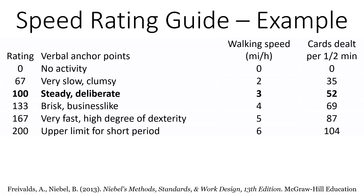Dealing about 52 cards in half a minute — 30 seconds — is considered normal speed. Anything faster than that has a very high pace rating, and it is very subjective. It is up to the time study person to decide what percentage should be added to the observed time.